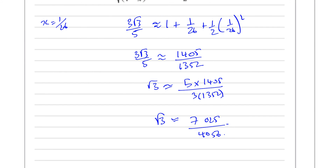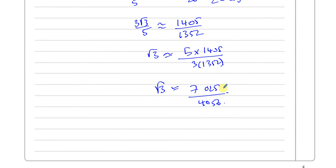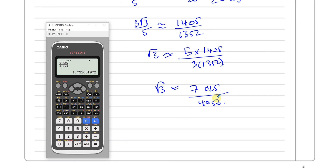The question asks for the answer in the form a over b where a and b are integers, so the answer is 7025 over 4056. Checking whether it simplifies — it does not simplify, so that is the final answer as a fraction.